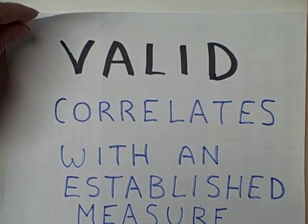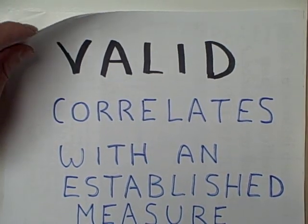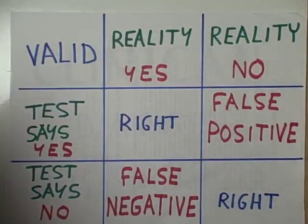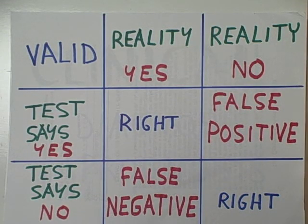The way that we demonstrate this correlation is by putting it into something like this, a two by two contingency table. The rows represent how each subject is going to be categorized in terms of performance on this new test or measure that we are trying to validate.